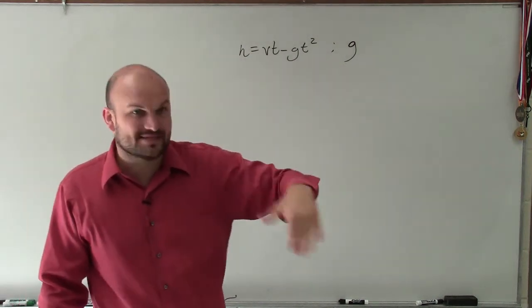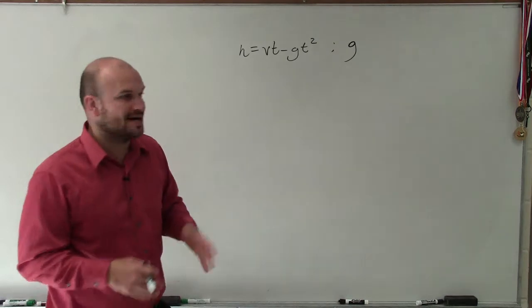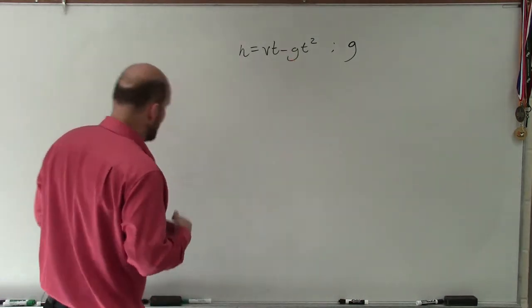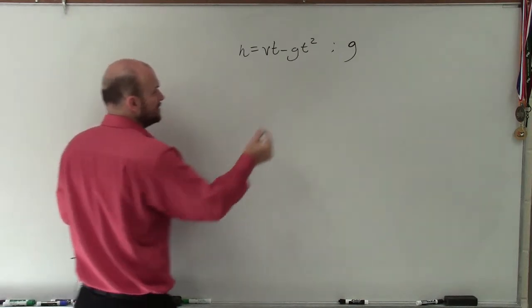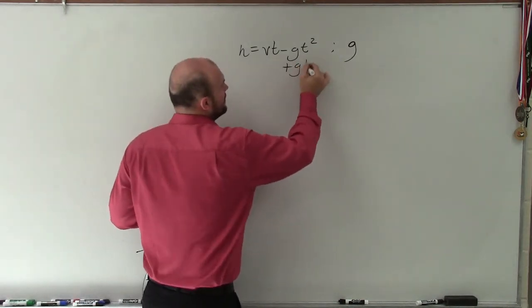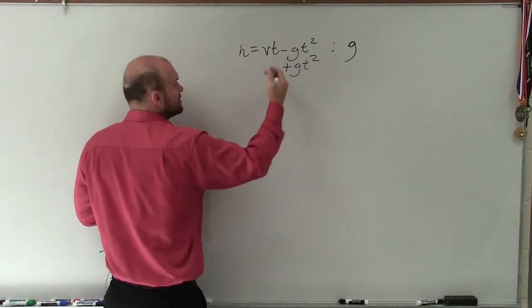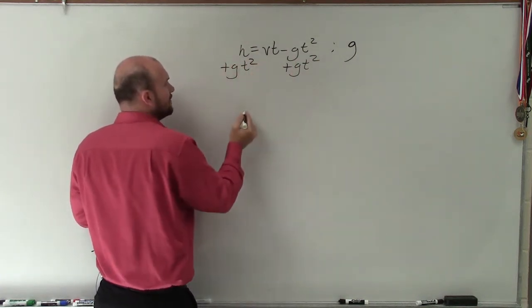A lot of times I say to pin the variable and leave it just on one side. Since this is negative, I'm actually going to put it to the other side so I can solve for the positive value of it, rather than having to divide it again. So to move g to the other side, g is being multiplied by t squared, so I've got to make sure I bring the whole term over.